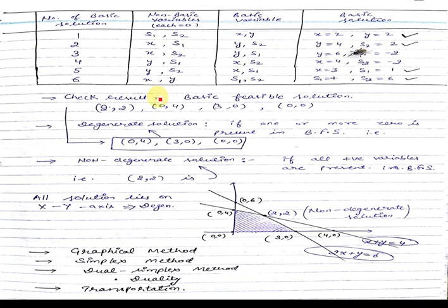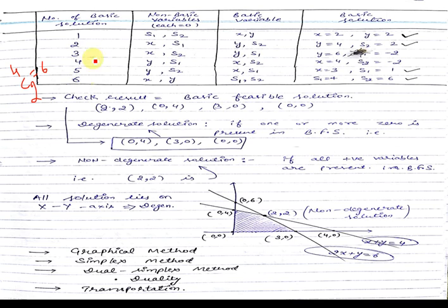So how many solutions can there be? This is calculated with the help of combinations — we have studied the formula of combination and permutation. How many equations are there? Two equations. How many variables? Four variables. So just calculate 4C2, and this comes out to be 6. So there will be six possible solutions.